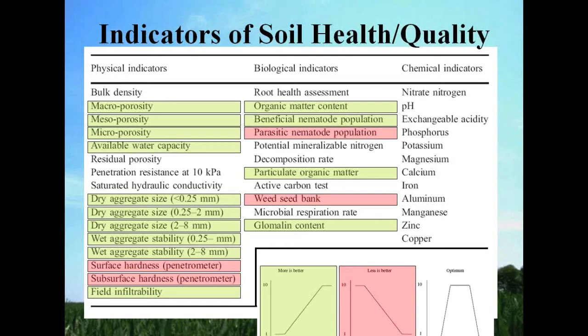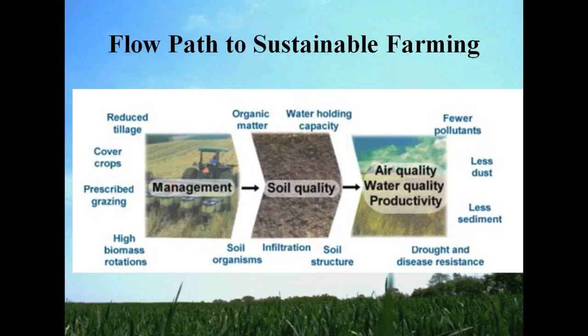In general, cover crops positively affect most indicators of soil health. Soil quality is a central component of a flow path to sustainable farming — cover crops and other types of management that add biomass to the system and reduce tillage can add to soil quality. Soil quality in turn results in higher air quality, water quality, and productivity.